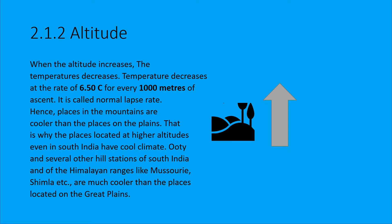The second factor is altitude. As altitude increases, temperature decreases. By how much? 6.5 degrees centigrade for every thousand metres — this is the normal lapse rate. That is why mountains are very cool.